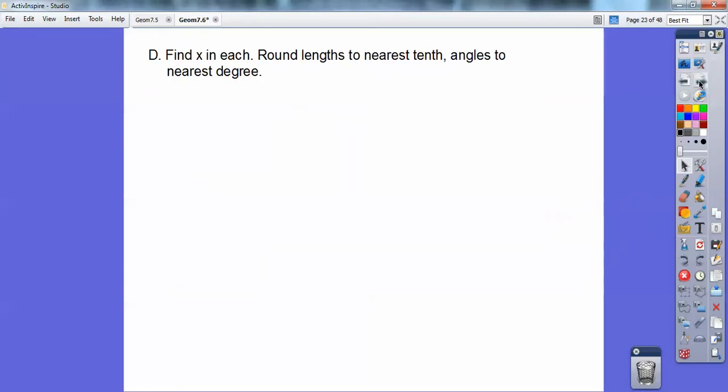Okay, so we're going to find, this is where it gets fun, you guys. Well, not yet. We're going to find some, actually, everything's fun in geometry, I think, anyways. Okay, we're going to round lengths to the nearest tenth and angles to the nearest degree. Okay, so here's number one. You've got this right triangle. You need to recognize, is it sine, cosine, or tangent?